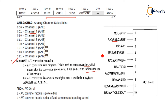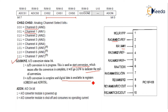If we set this bit to 1, conversion is in process and we must keep observing the register. When conversion is complete, we make it 0. If it is 0, conversion is complete and the digital data is available in registers ADRESH and ADRESL.